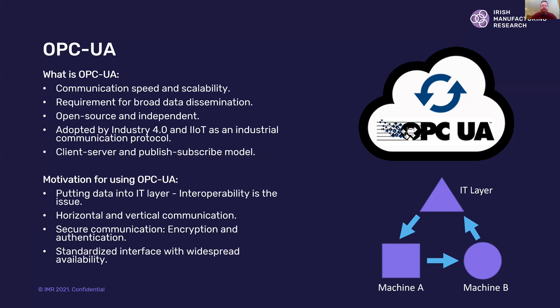OPC UA is an approach for Industry 4.0 and IIoT as a communication protocol. It uses a client-subscriber mechanism and publish-subscribe model to exchange data, not only between devices but between layers within a factory. The motivation is to put information from the factory floor onto the IT layer and have interoperability between both layers and devices — encompassed by horizontal communication between devices and subnets, and vertical communication between the enterprise layer, IT layer, and OT layer.